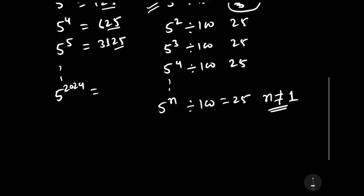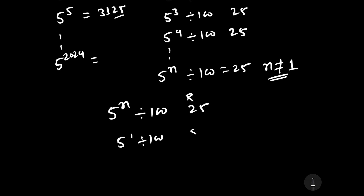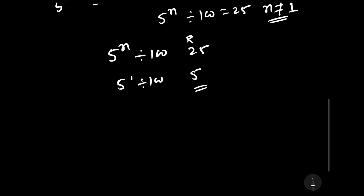Hence, we can say that whatever is the power n, the remainder will be equal to 25, except in the case of 5 to the power 1, where the remainder is equal to 5. Hence, our required solution is that the remainder is equal to 25.